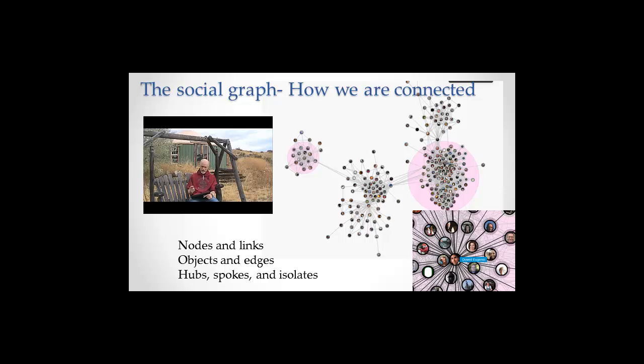So in the case of the social graph, they're people, but in the case of Facebook, they call each of these nodes, each of these people an object. But the word object can apply to more than just a person. So instead of saying links, which is pretty clear, they say edges.